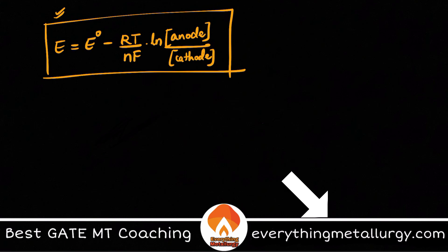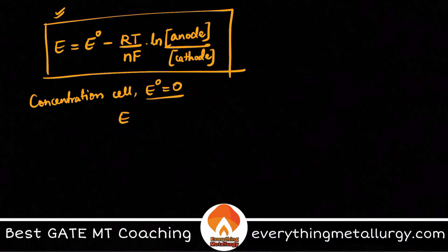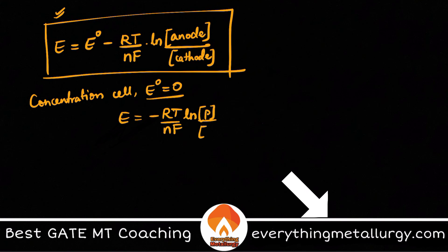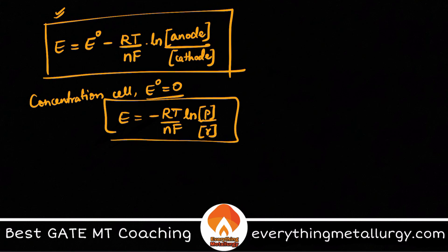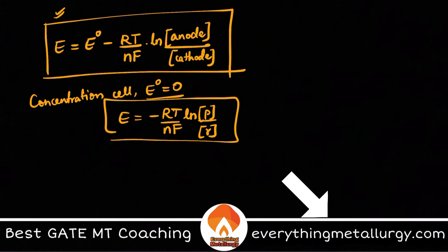We also have extensions of the Nernst equation — for example, a concentration cell. In a concentration cell, E° is zero, so the cell potential comes entirely from the concentration term. This is because both electrodes are made of the same metal but at different concentrations. A classic example is electrolytic refining, where impure metals are purified to 100% pure metals.